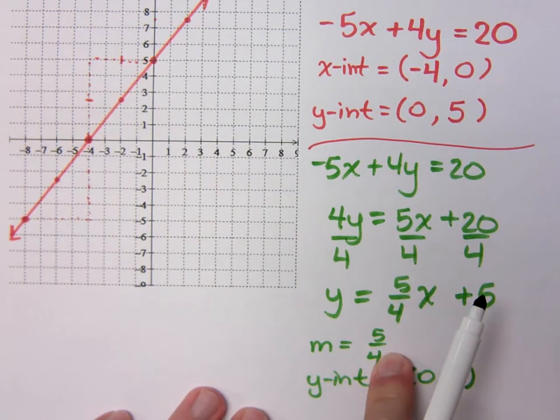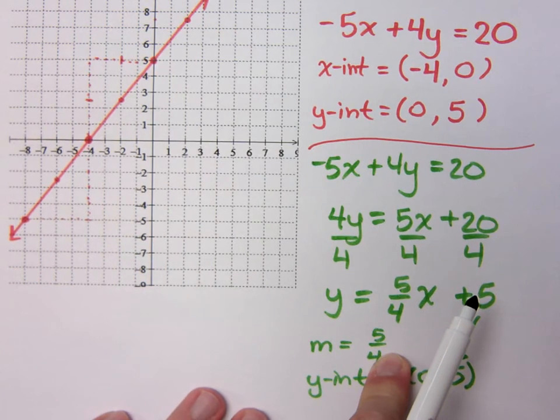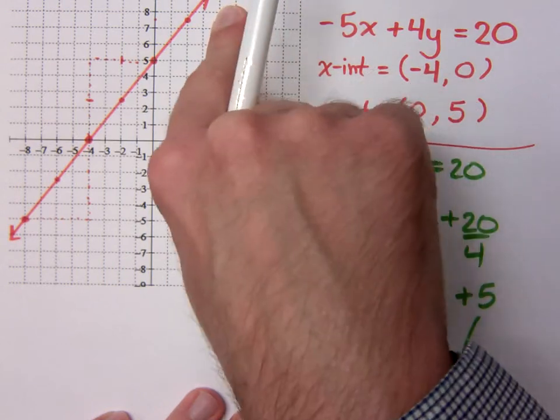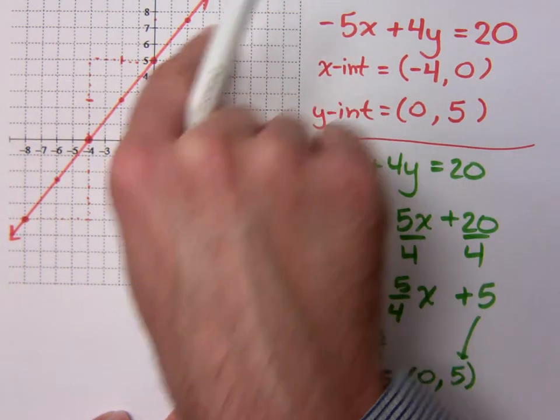My slope is 5/4. Is that positive or negative? Positive. So that means from left to right, what is my graph doing? What is my line doing? It's increasing. Positive is increasing, right? And no matter what two points you pick here, the ratio of rise to run is always going to be the same.